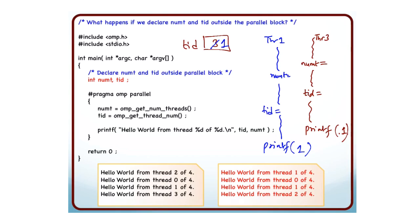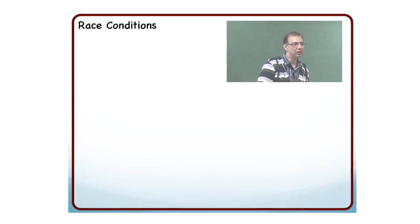This is essentially a race condition. When there are variables or resources being shared by multiple threads and they try to update that variable at the same time, then you run into race condition.